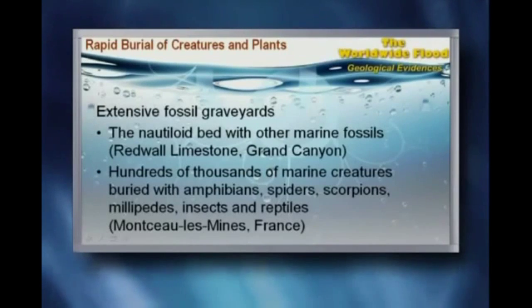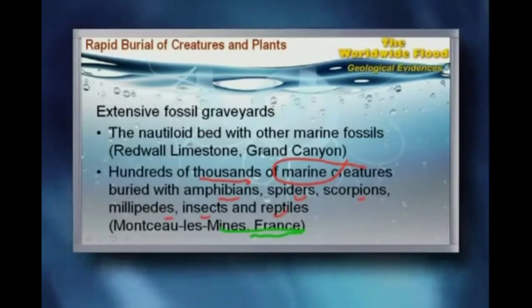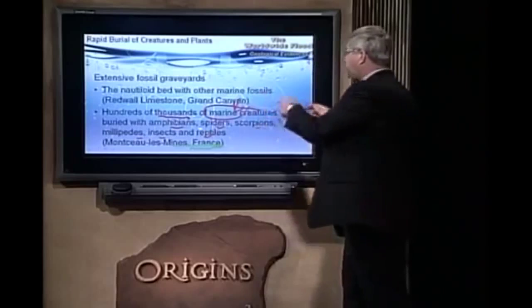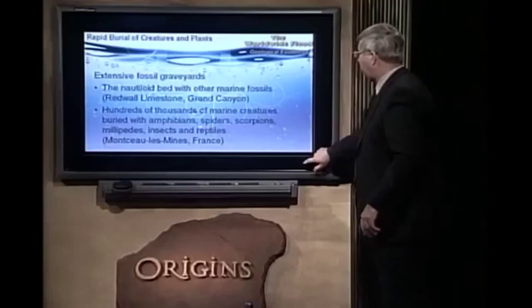That's not the only example. In France, we find hundreds of thousands of marine creatures buried with amphibians, spiders, scorpions, millipedes, insects, and reptiles — all land creatures. So you've got a mixture of land and marine creatures together. A flood with ocean waters coming up onto the continents brings the marine creatures and buries them with the land creatures. There doesn't seem to be any other explanation. A local flood would only have land creatures; a global flood, with ocean waters coming up onto the continents, brings marine creatures and buries them with land creatures.